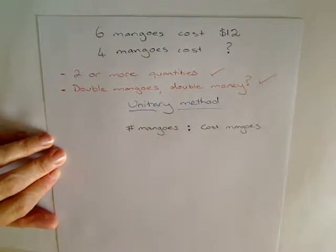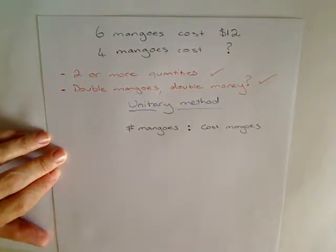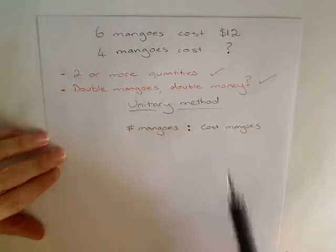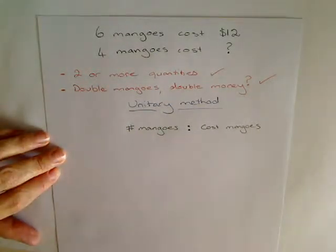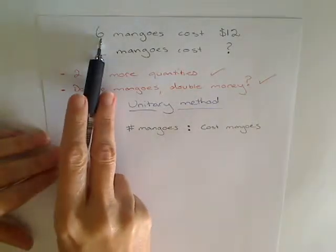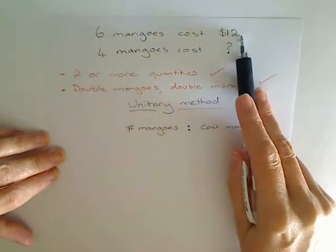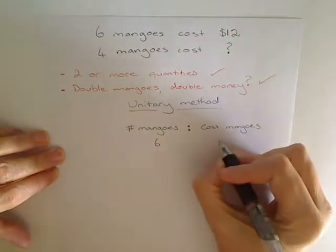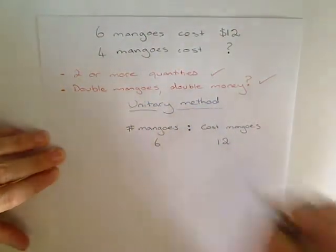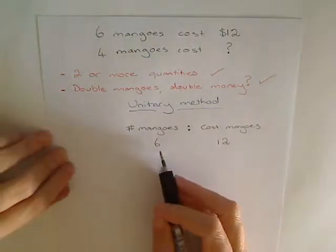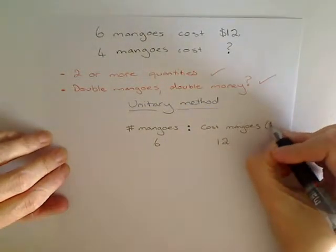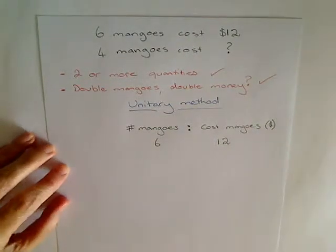You should always have some information about a ratio already — a ratio where you know both values together. Going back to the problem, I know that 6 mangoes will cost $12. So that's the line I put in first: 6 is to 12 — six mangoes for $12. I'll put my dollar sign there to keep the units organised.